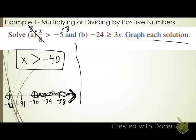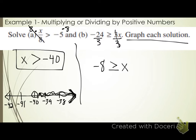Letter B: negative 24 is greater than or equal to 3x. What number is on the same side as x? Three. Operation between 3 and x? Multiplication. Inverse is division, so divide both sides by 3. Negative 24 divided by 3 is negative 8, and I'm left with x on the right. Did I divide both sides by a negative? No, by positive 3. So the symbol stays the same: negative 8 is greater than or equal to x.